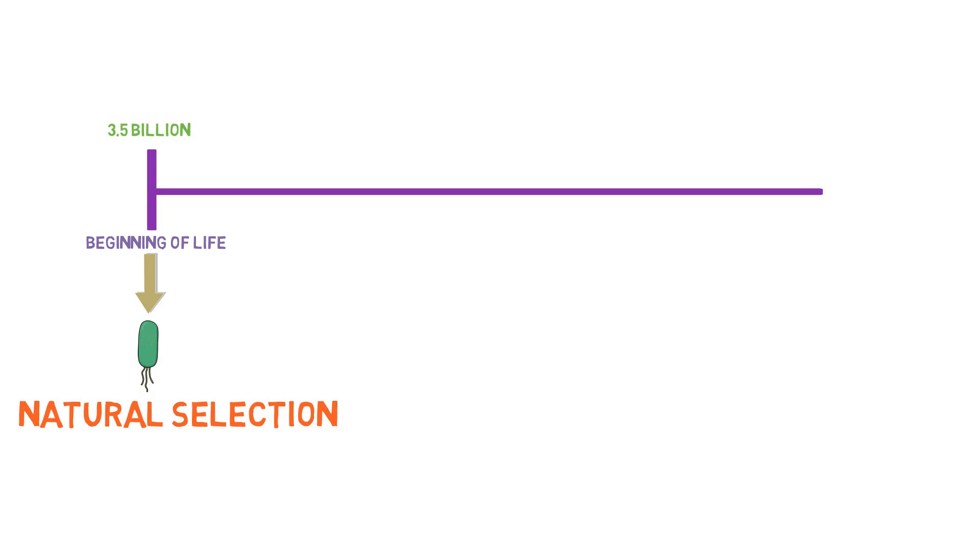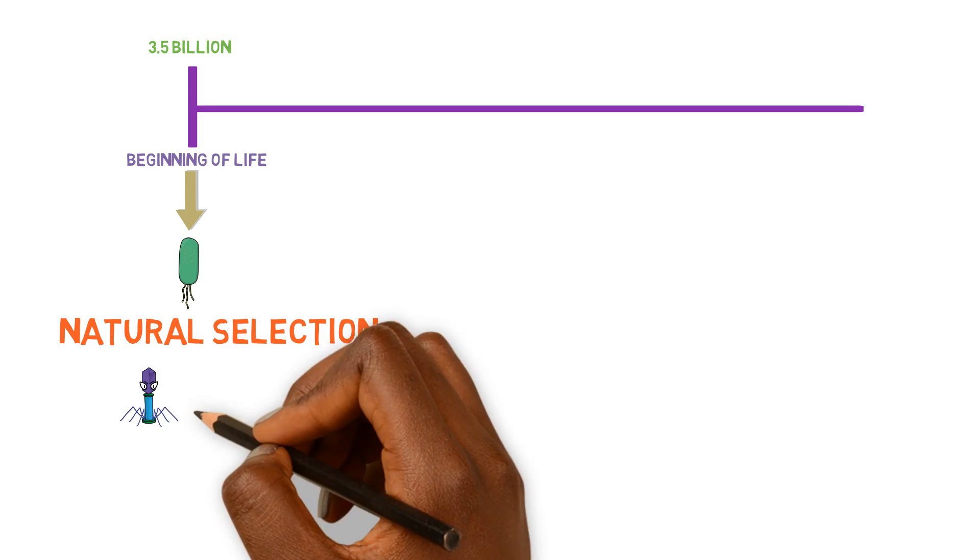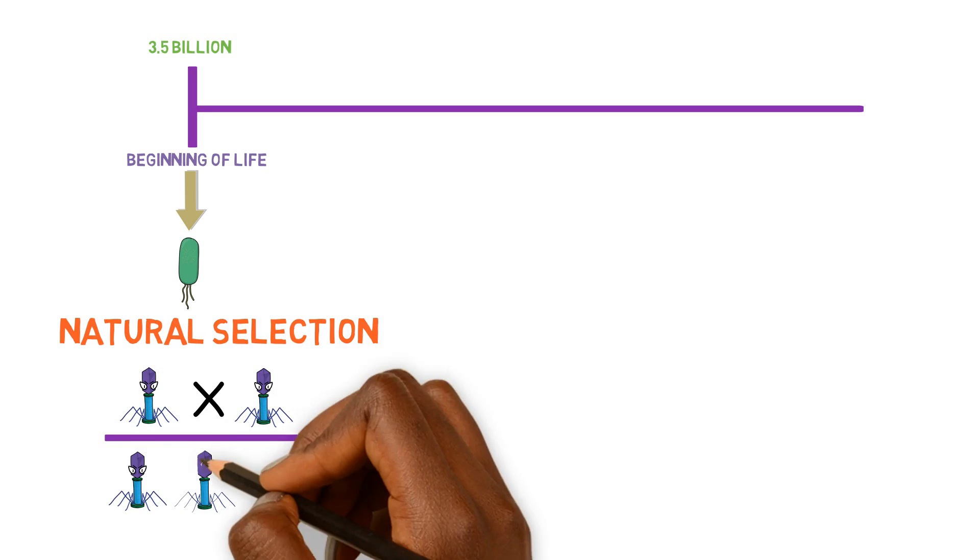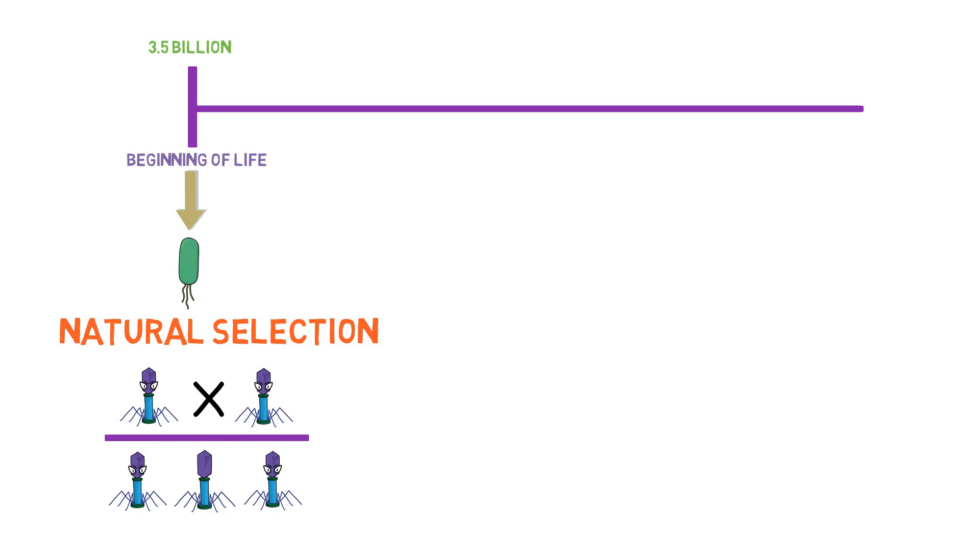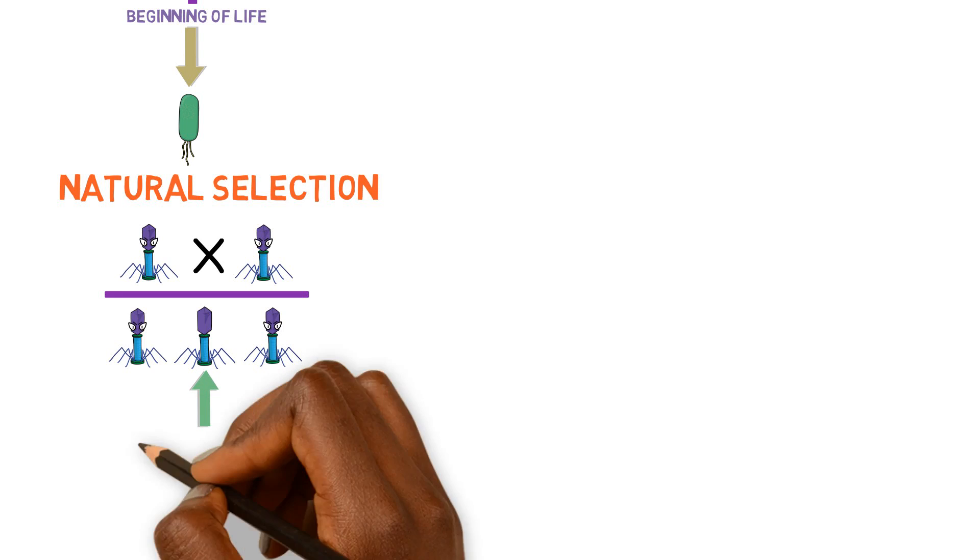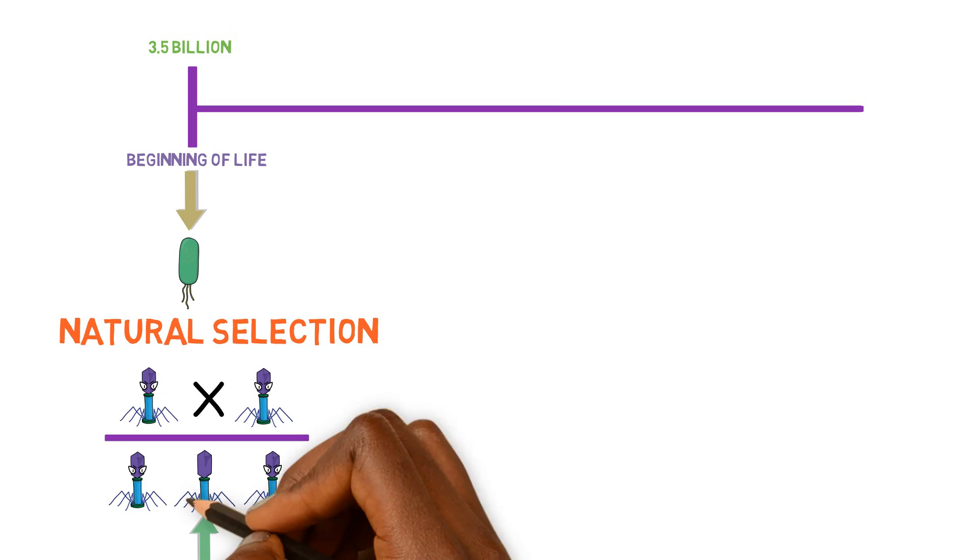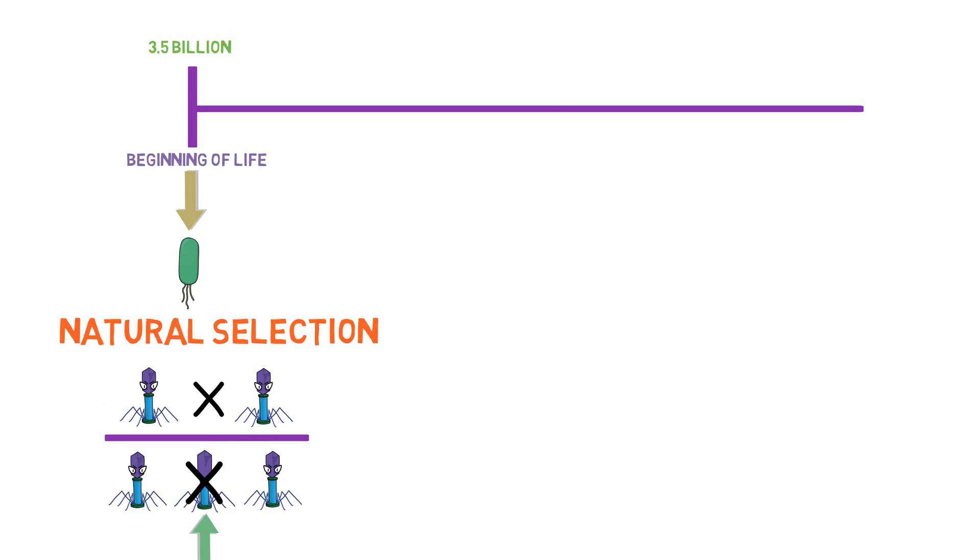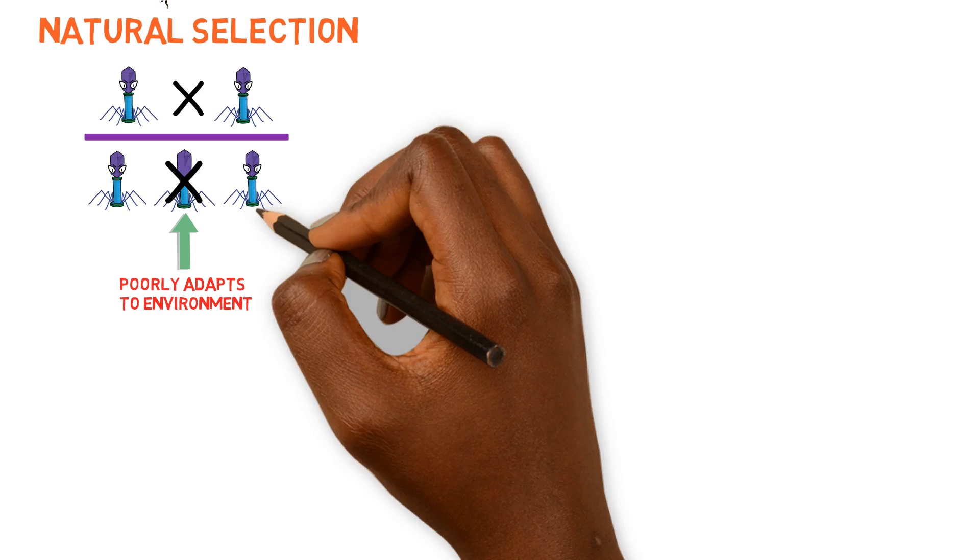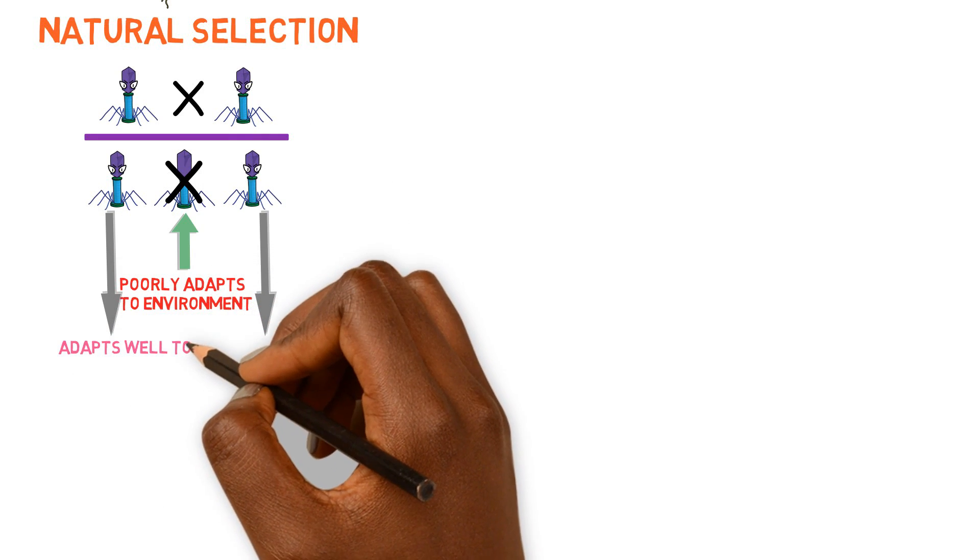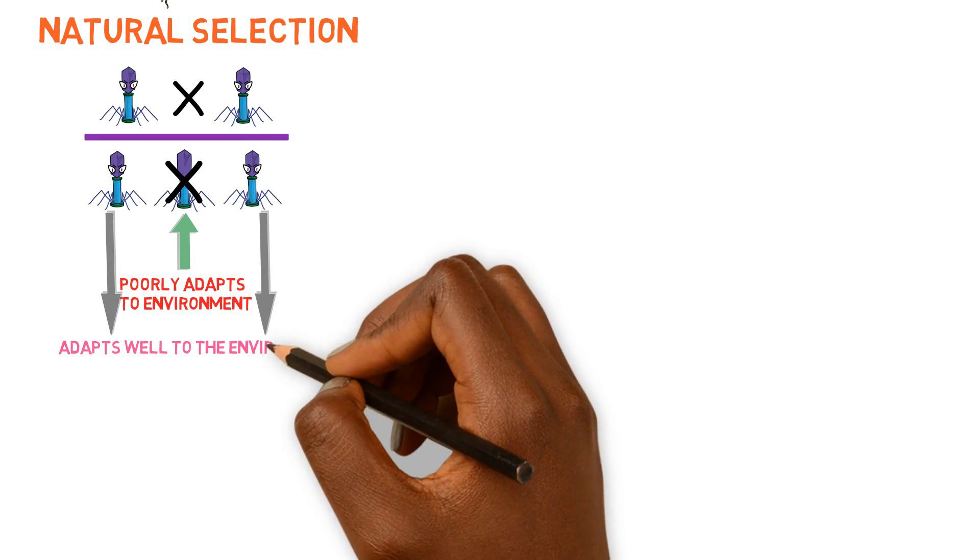Natural selection is simple to understand. Organisms produce offspring which differ slightly from one another. Some offspring have features and genetics that make them poorly adapted to the environment, making them more likely to grow and reproduce poorly. Other offspring obtain favorable features that adapt well over time, and they will reproduce abundantly.